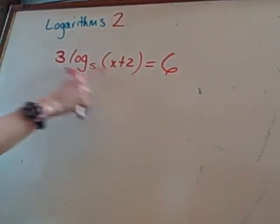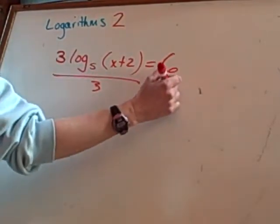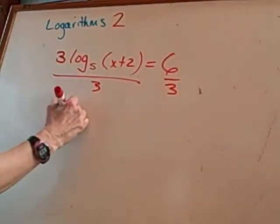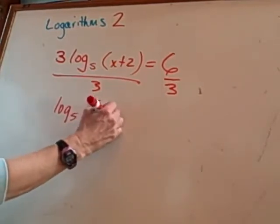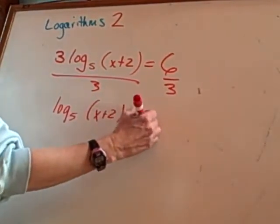Since this whole enchilada is being multiplied by three, we're going to divide both sides by three. That's going to leave us with log base five of x plus two equals two.